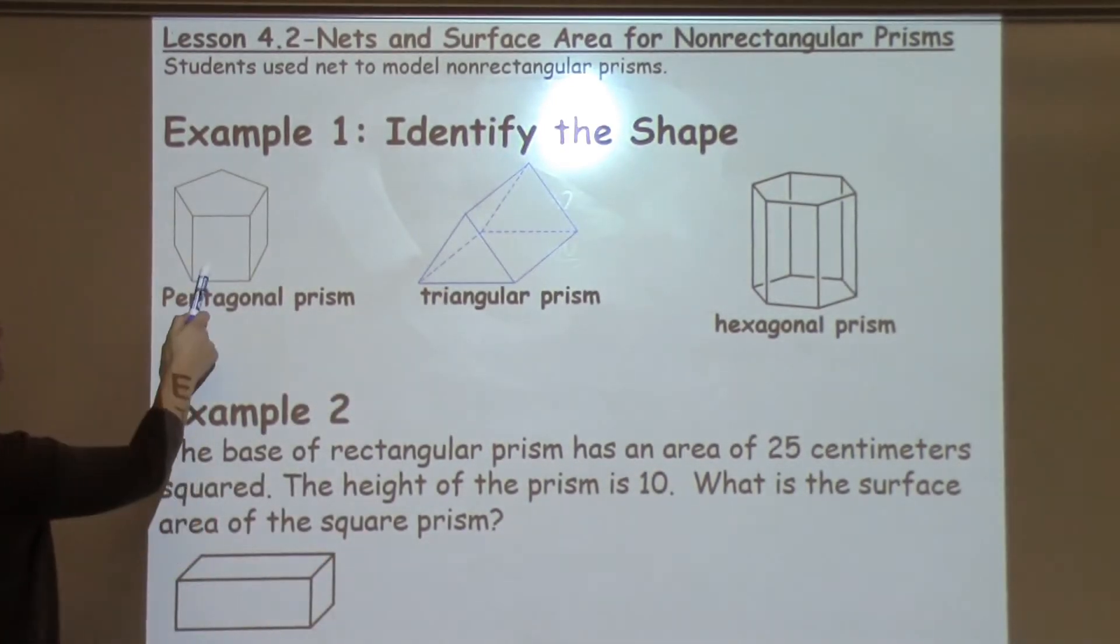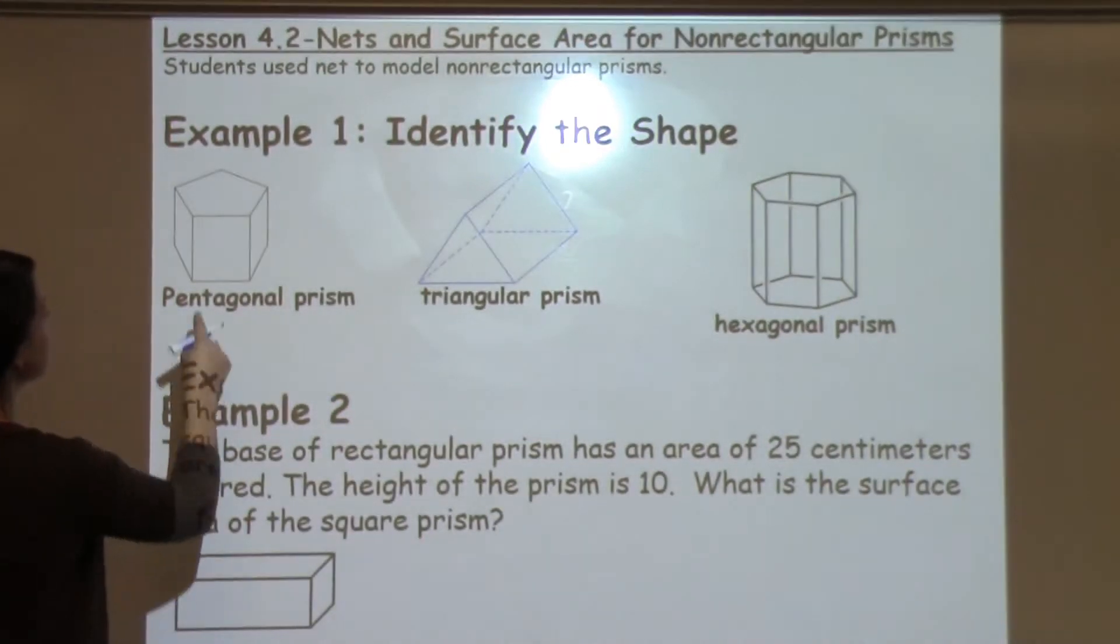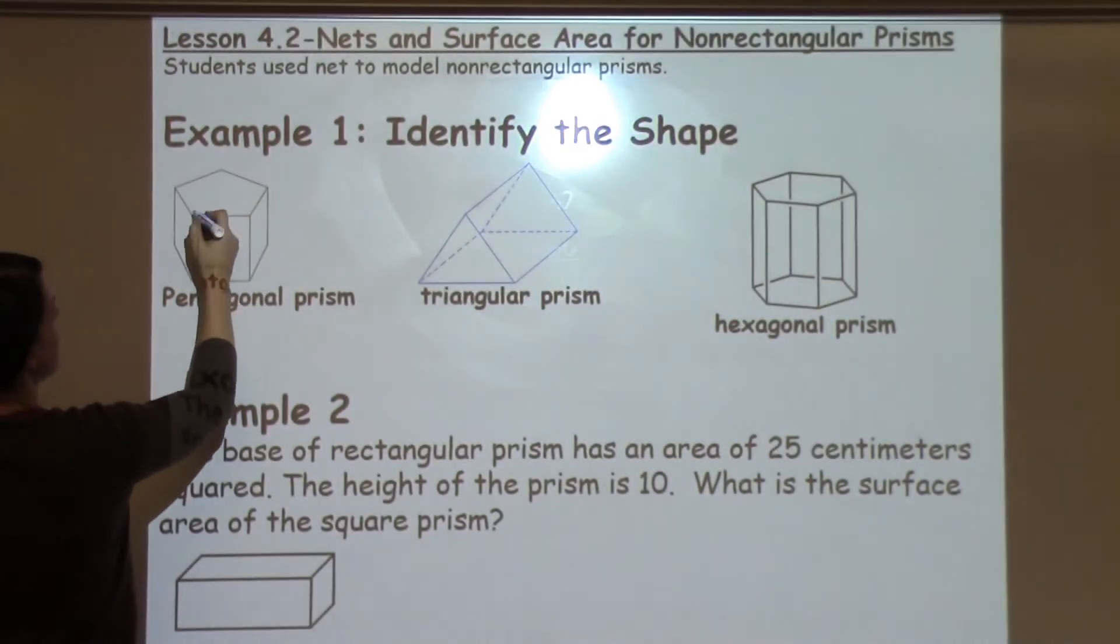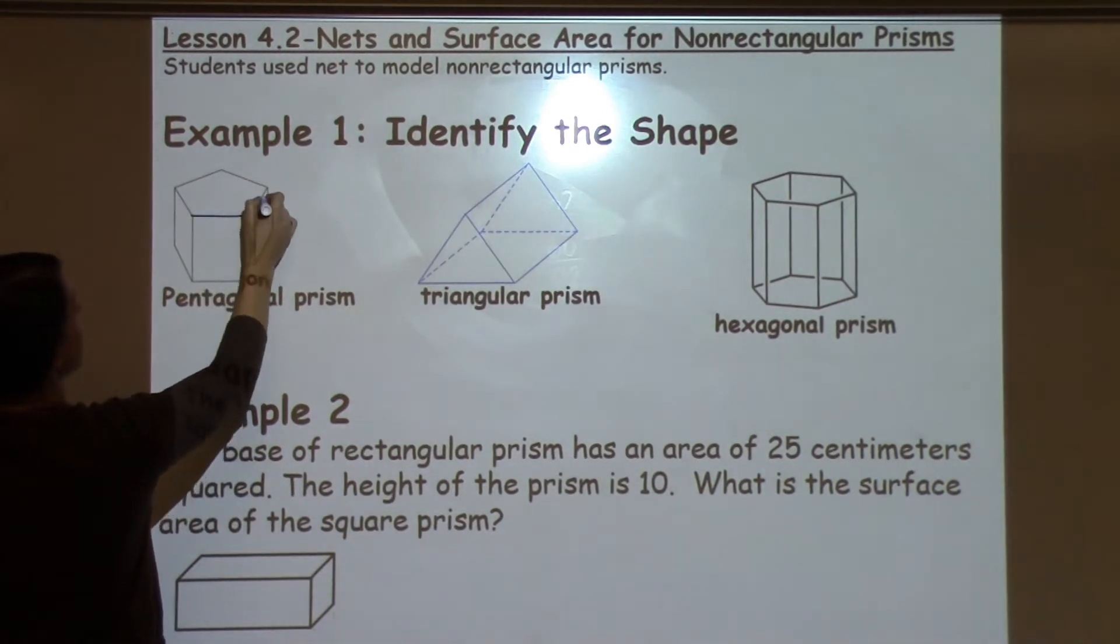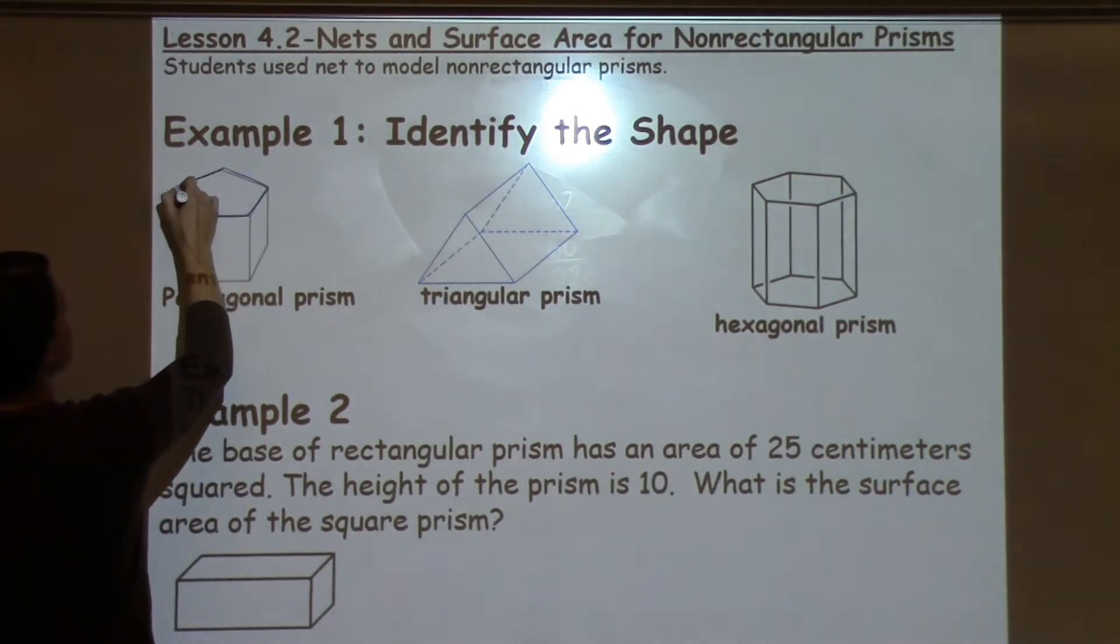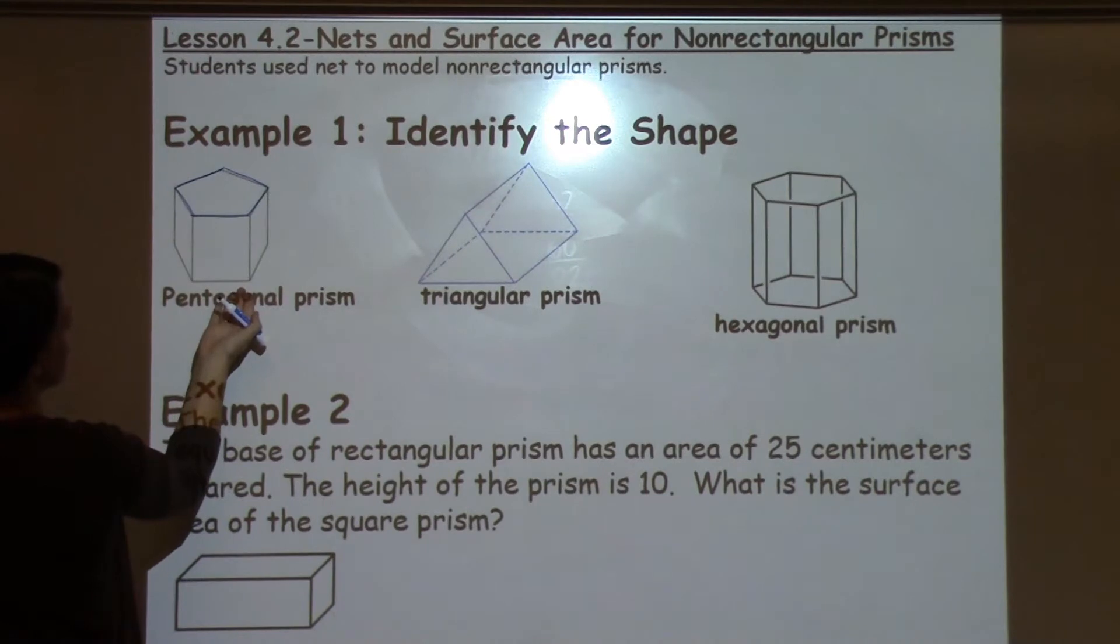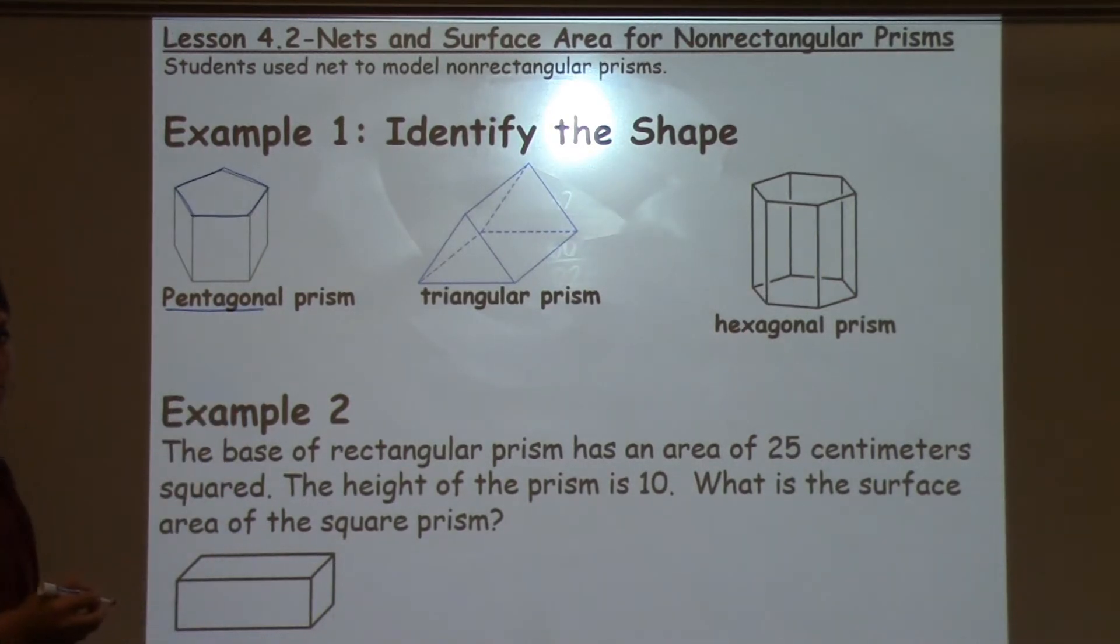When they're looking at a shape, a way to identify it is to look at the shape that is on the bottom. So on the bottom and the top, right? So the base of the shape, and in this case I'm looking at the top of it, but the same shape would be on the bottom, is a five-sided shape. So that's a pentagon. That's where I come up with this first part of the name.